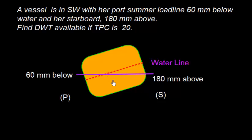These are the load line marks. So we can say that port side load line mark is 60mm below water line. This is the water line, so this is 60mm below water. And the starboard side one is 180mm above. So this is the water line mark, this is the load line mark, and this is the water line, so this is 180mm above.